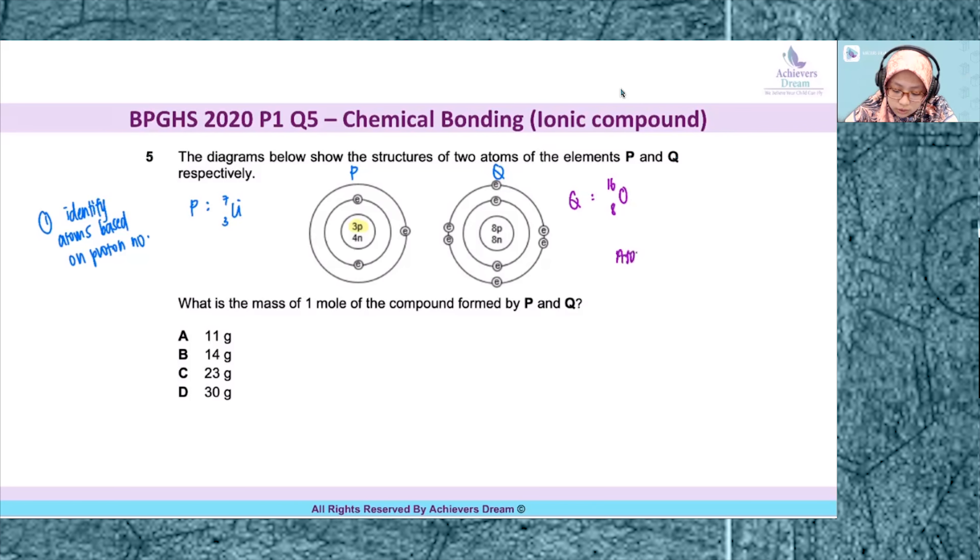So again, let me remind you how to write your atomic notation. This would be your symbol, X is symbol, A is nucleon or mass number, B is your proton or atomic number. This one you all must remember in case it comes out for structure, you need to be able to represent or write out the atomic notation correctly.